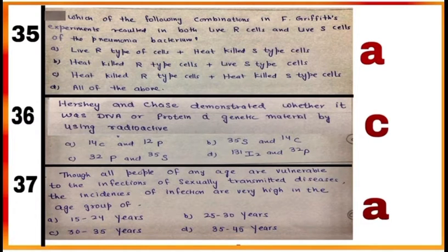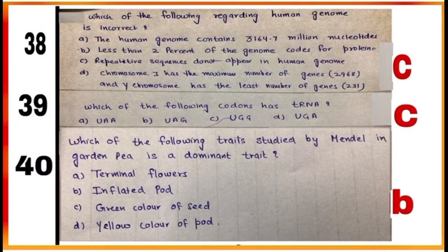Question 38, 39, and 40: learn salient features of human genome. Learn some important codons like start codons, stop codons, etc., and also learn table number 5.1 and 5.3 of your book.